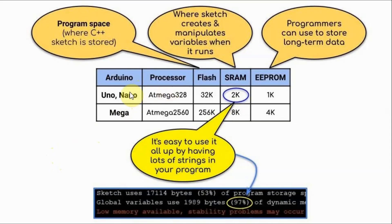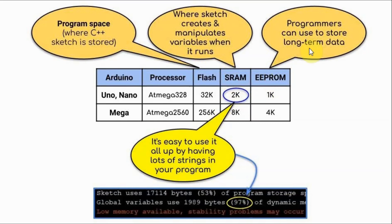This table shows the three different types of memory available on the Arduino boards — the Uno, the Nano, and the Mega. We have flash memory, which is used to store the C++ sketch. We have the static RAM, where the sketch creates and manipulates variables during runtime. And we have the EEPROM, which is used by the programmer to store long-term data.